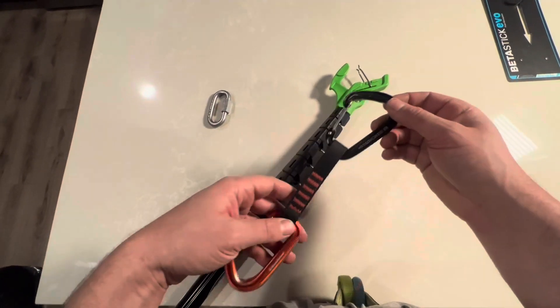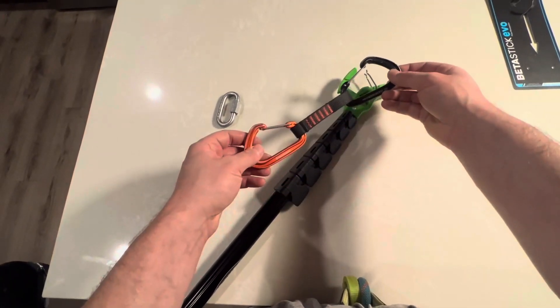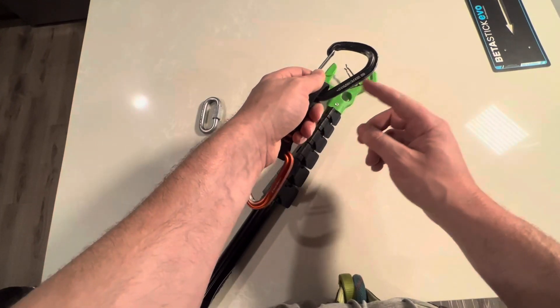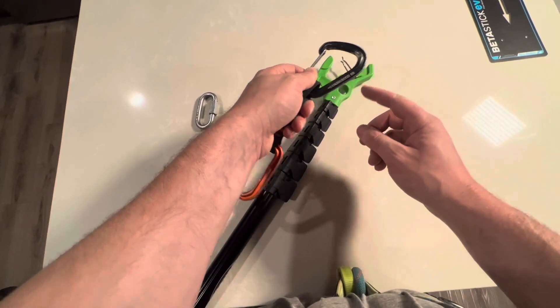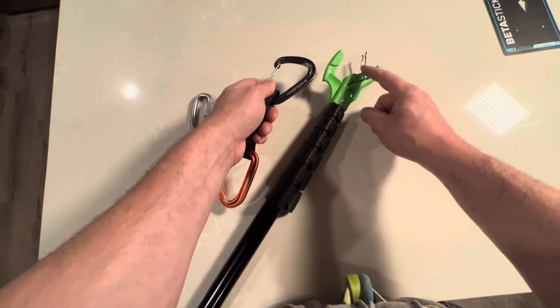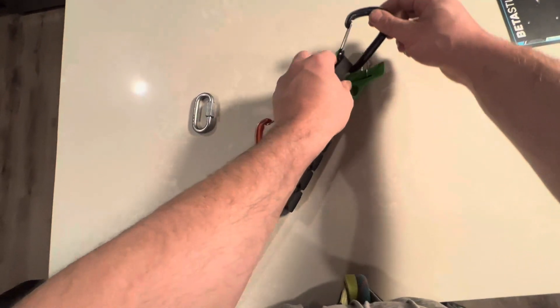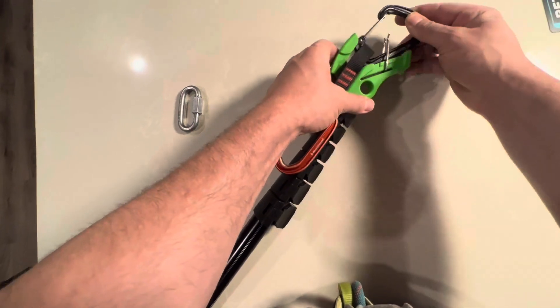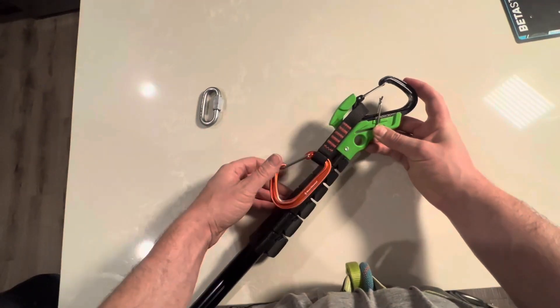In terms of putting the quickdraw onto the stick, it's very simple. You have to align the spine of the carabiner here so that it is aligned right here. So the way that I do it is I just kind of finagle it in there and then I sort of get it so that it sits nicely like that.